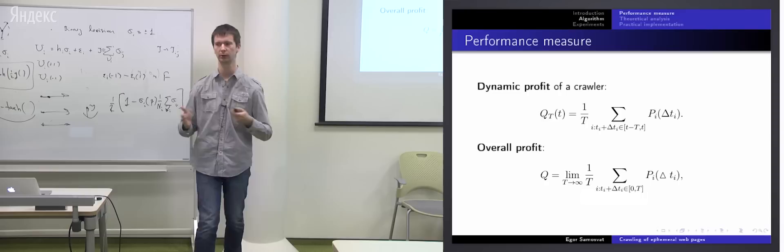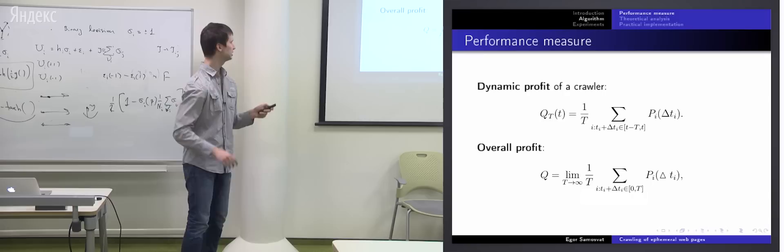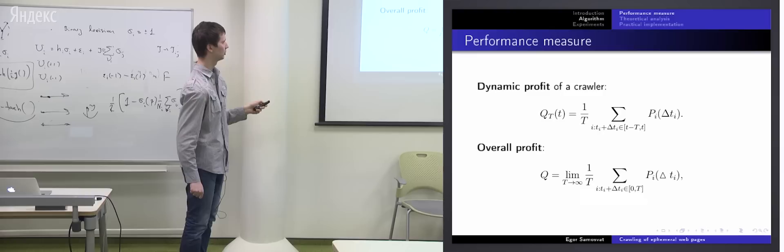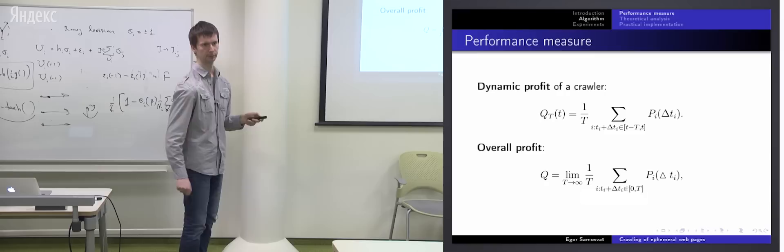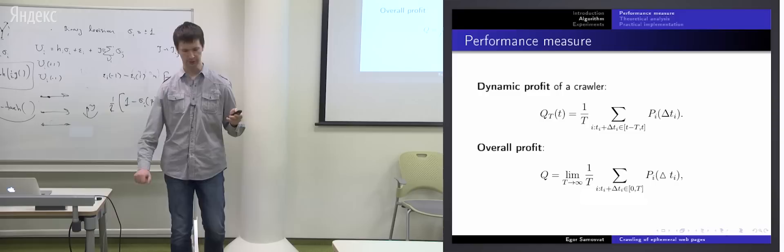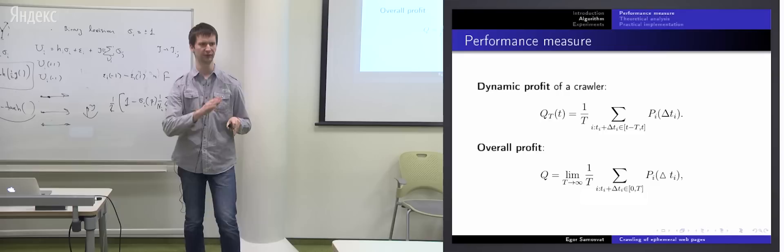So I'll remind the content sources are categories on news sites, main pages of hosts and so on. So we can assume that for some categories of web pages this decay factor is bigger, for some is lower and so on. Okay, now we are ready to define a profit measure for a crawler. The first measure which we used is dynamic profit of a crawler. It's an average profit of web pages crawled in time window of size big T.